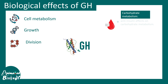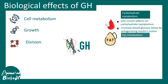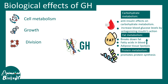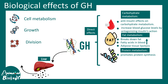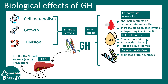Growth hormone can alter different biological functions including cell metabolism, growth, and division. It has an anti-insulin-like effect, meaning it elevates blood glucose levels. It alters fat metabolism by breaking down fat, increasing fatty acids in blood, and promoting lipolysis. In terms of protein metabolism, it promotes protein anabolism and muscle building. Most of these effects are not direct but are mediated via IGF or insulin-like growth factor, secreted by the liver.